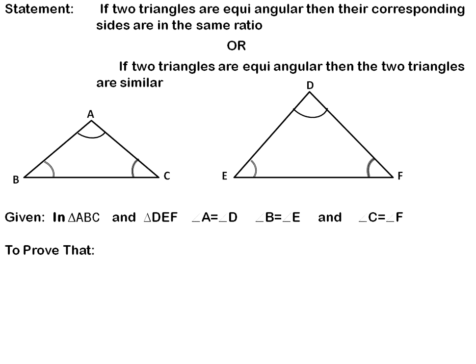The second part of the statement is to prove that the two triangles are similar, or that the corresponding sides are in the same ratio. So, AB divided by DE — where A and B are the first and second letters in triangle ABC, and D and E are the first and second letters in triangle DEF — equals BC divided by EF, which equals CA divided by FD.